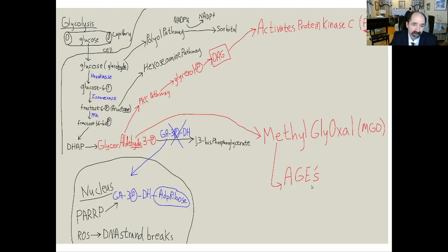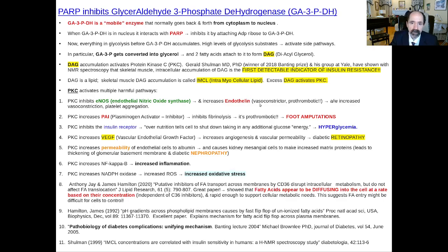The key enzyme that ends up being inhibited is glyceraldehyde 3-phosphate dehydrogenase, GA3PDH. This is a very big deal for the complications of diabetes. The substrate located immediately before that enzyme is glyceraldehyde 3-phosphate. That is diverted into several different side pathways. It gets diverted into production of diacylglycerols, which activate protein kinase C. That causes insulin resistance specifically, as well as other major problems.